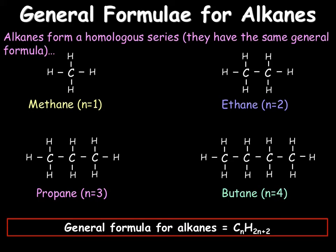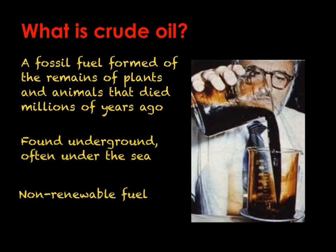But where do we find these alkanes? Alkanes come from crude oil. Crude oil is a fossil fuel that was formed from remains of plants and animals, mainly plankton, that died millions of years ago. This was then converted into crude oil over a long period of time. We can drill this up predominantly from under the sea. It is also a non-renewable fuel.